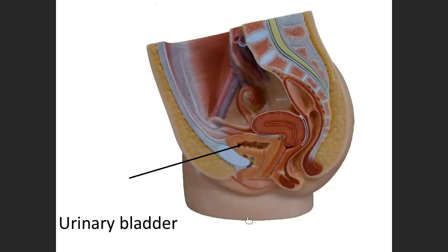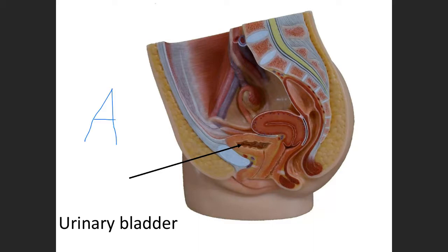This is a mid-sagittal section — a cut. You can see the urinary bladder in the mid-sagittal cut here. Here is the anterior portion of the model, here's the posterior portion. The urinary bladder is closer to the anterior, the front. There are a couple of other structures here that you're going to be responsible for, and we're going to label them in a moment.